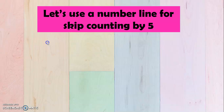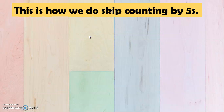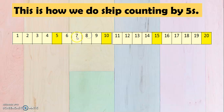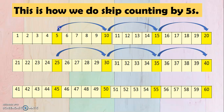Now, my dear grade 1, let's use a number line for skip counting by 5. So we have here 5, we start with 5, and then 10, 15, 20, 25, 30, 35, 40, 45, 50, 55, and 60. The same goes with the other numbers.